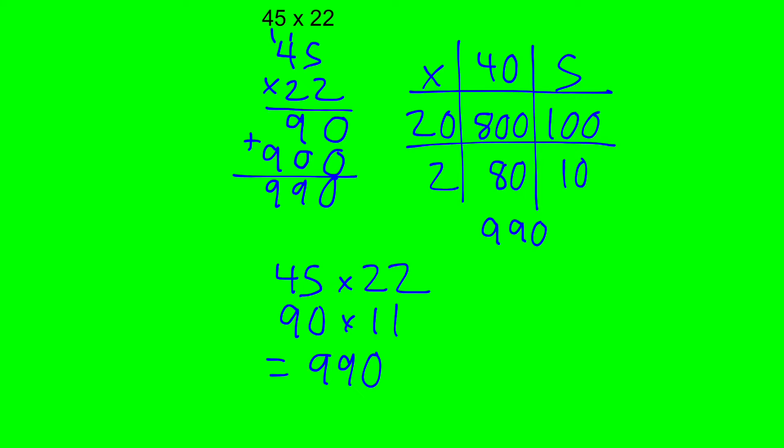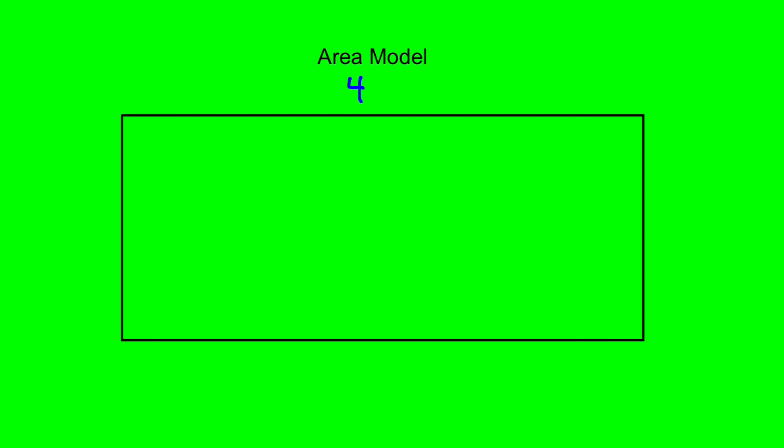What I also showed the kids — because I wanted to make a connection to what we're going to do with multiplying mixed numbers — I showed them something called the area model. We talked about how to calculate the area of a rectangle: you can do length times width, you do a multiplication. So what we did is we drew a rectangle. On this one, the long side of the rectangle is 45 and the short side was 22, so this is the multiplication question we were working on.